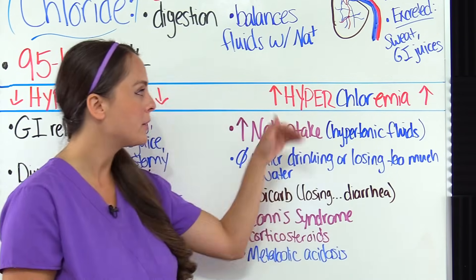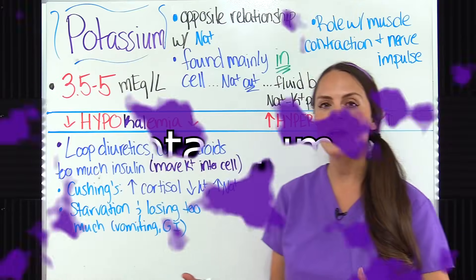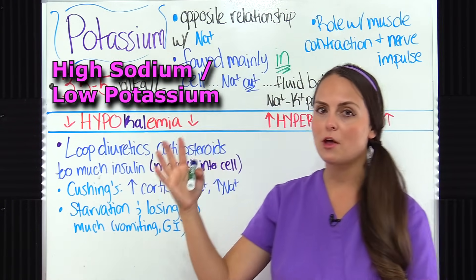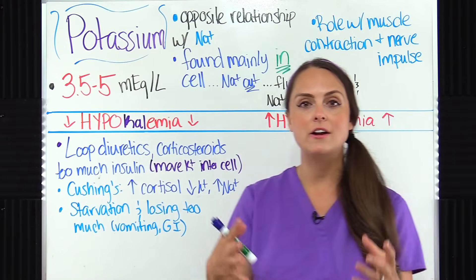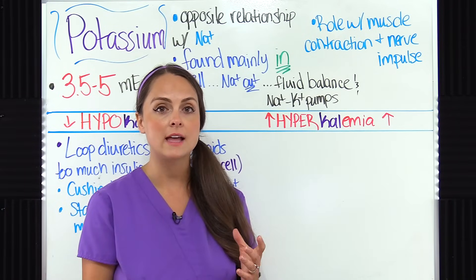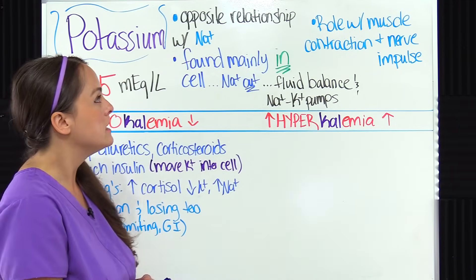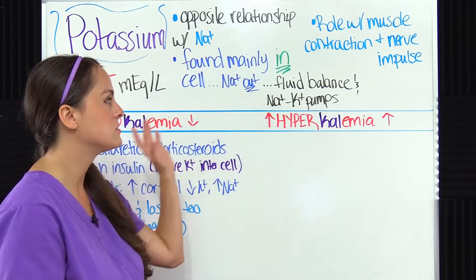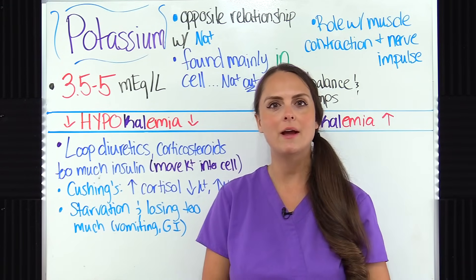The signs and symptoms of hyperchloremia are similar to hypernatremia and acidosis. Now let's look at the electrolyte potassium. Potassium has an opposite relationship with sodium — so if you have a high sodium level you'll likely have a low potassium level, and vice versa. This is because potassium is mainly found inside the cell, with a higher concentration there, while sodium has a higher concentration outside the cell. They work together to balance fluid within the cell and play a huge role in the sodium-potassium pumps. A normal potassium level is about 3.5 to 5 milliequivalents per liter — a very narrow but very important range.